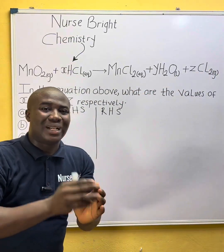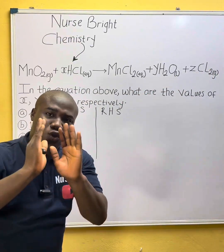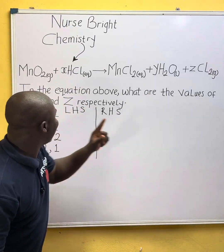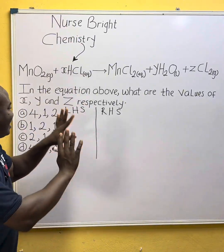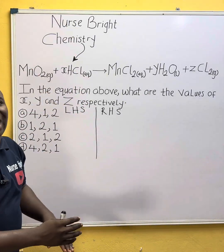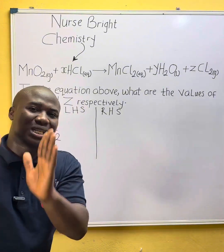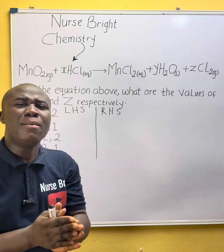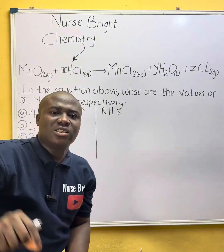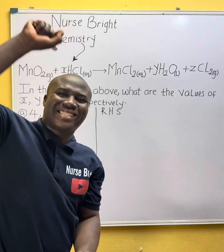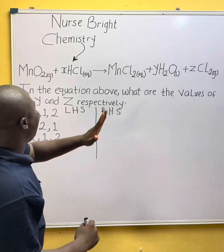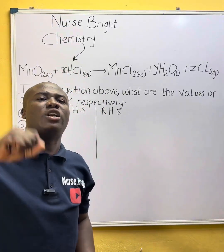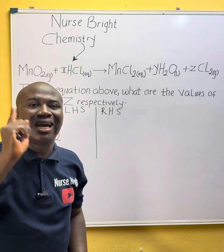The next step: simply write out the elements you are seeing in the left-hand side, and do the same for the right-hand side. Don't worry about this part where the question asks for the values of X, Y, and Z — we'll come to that.